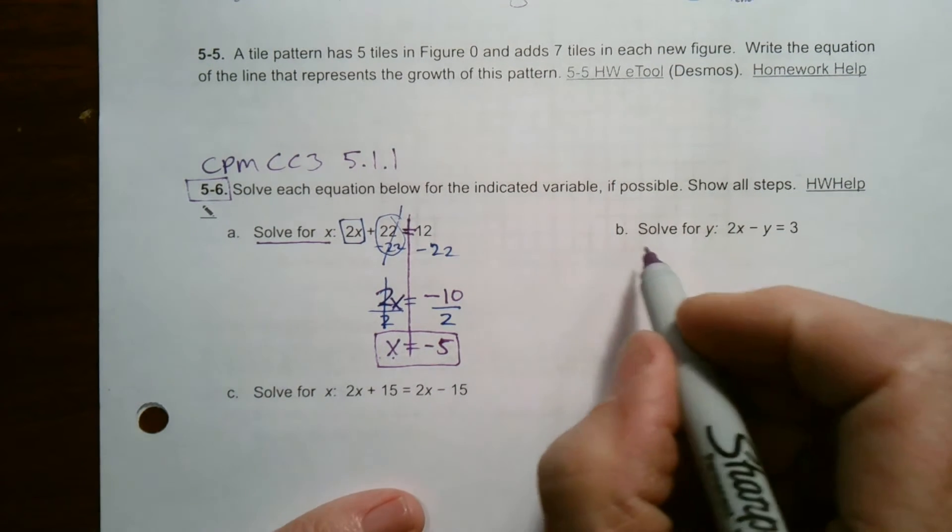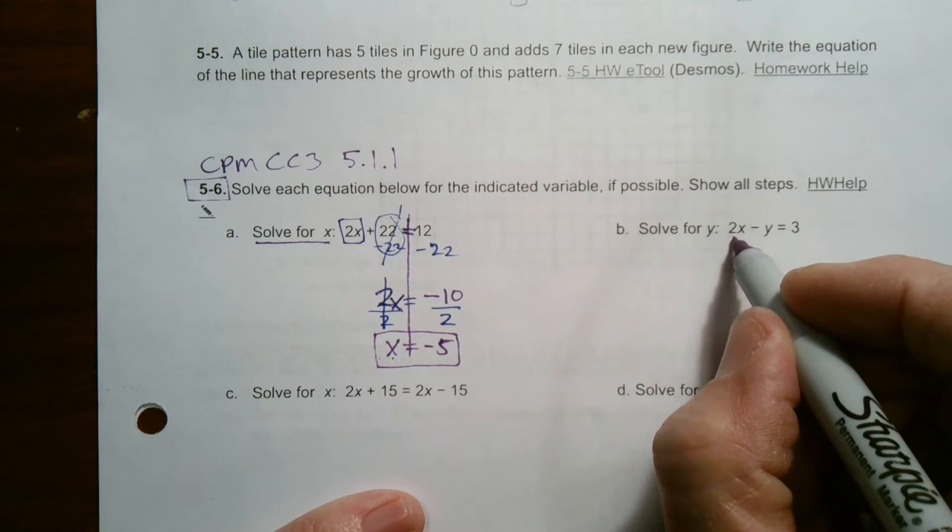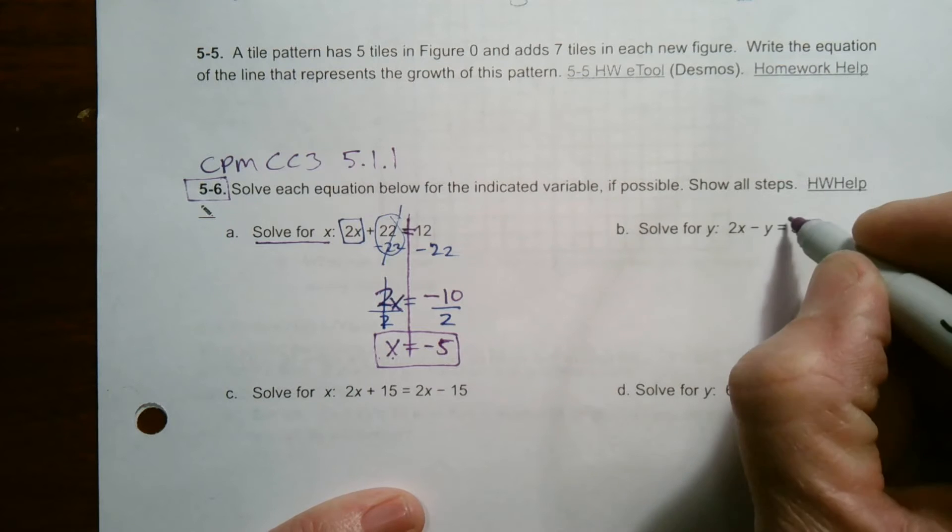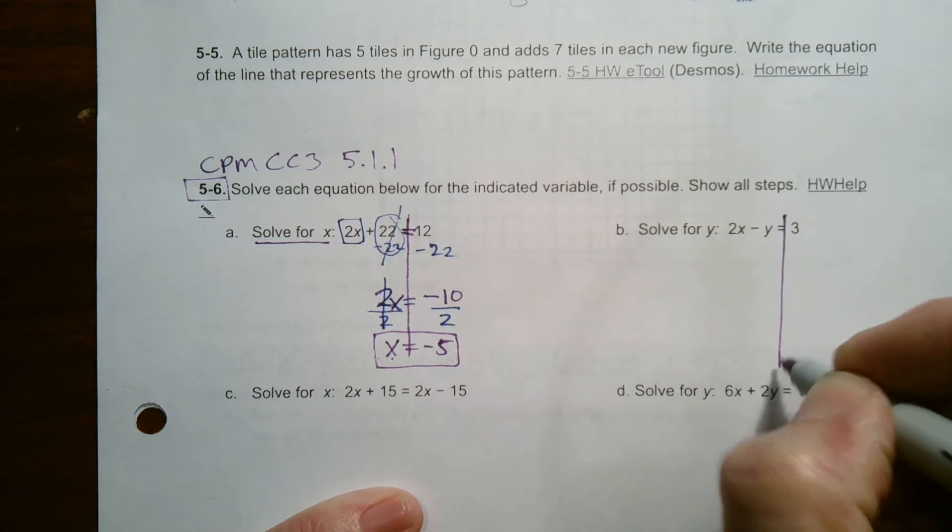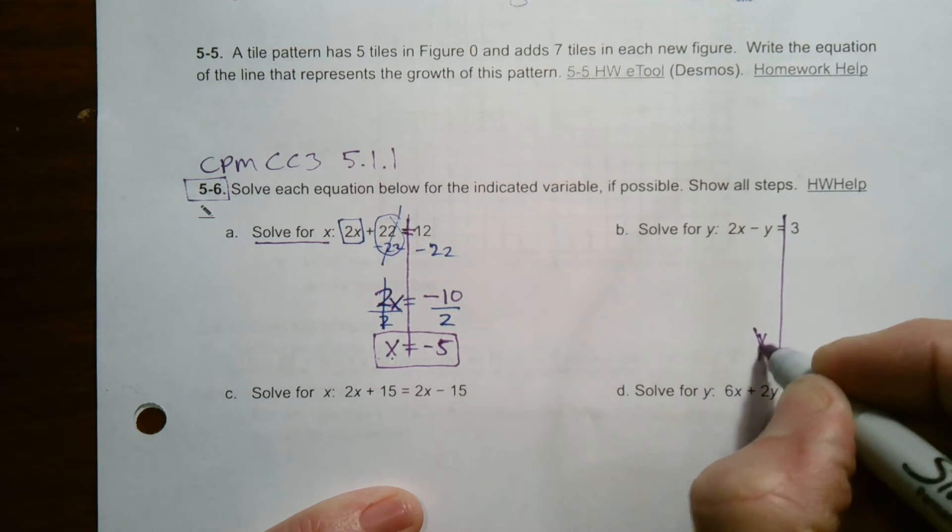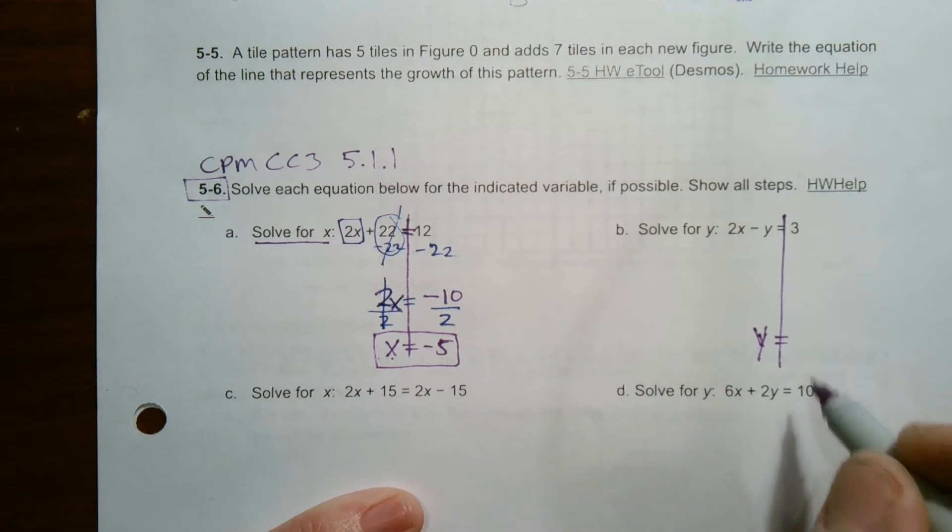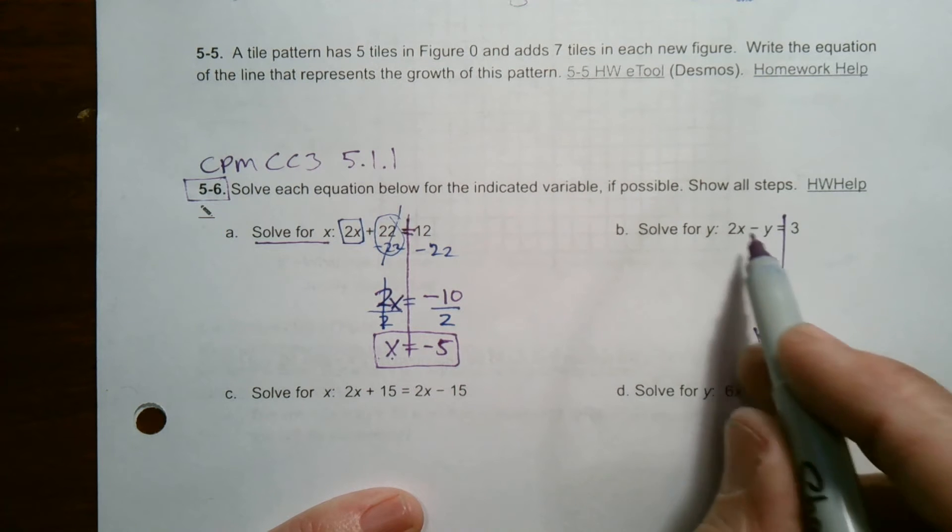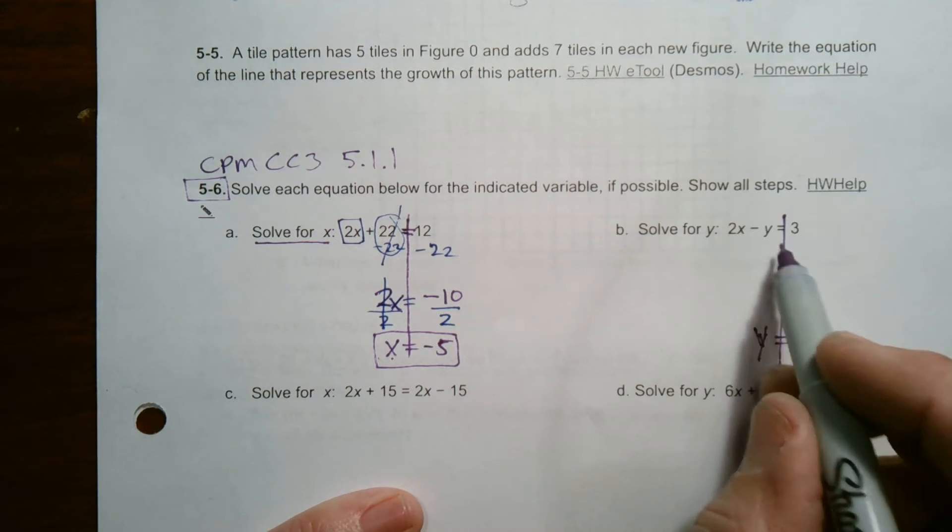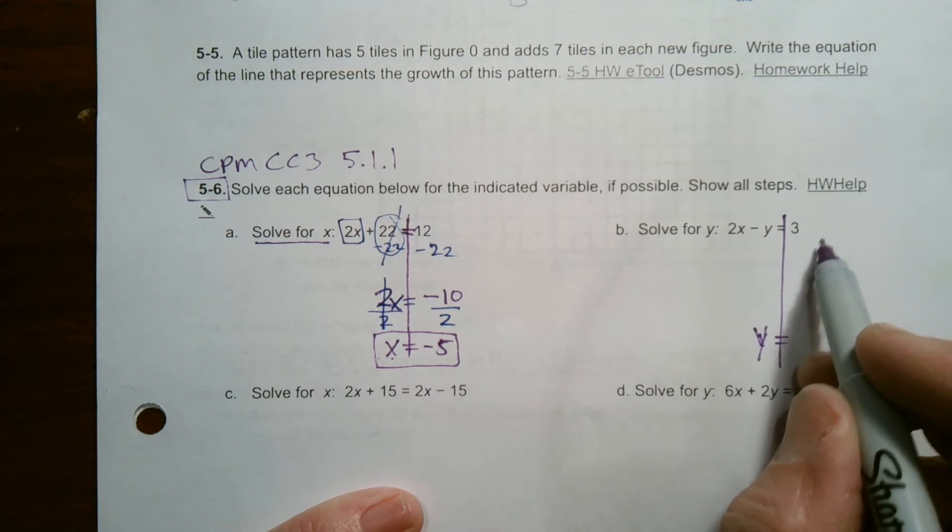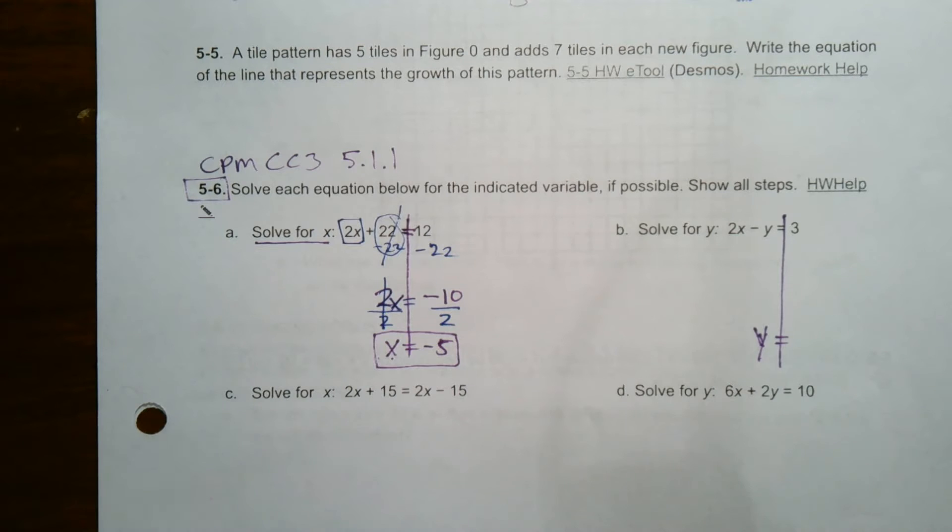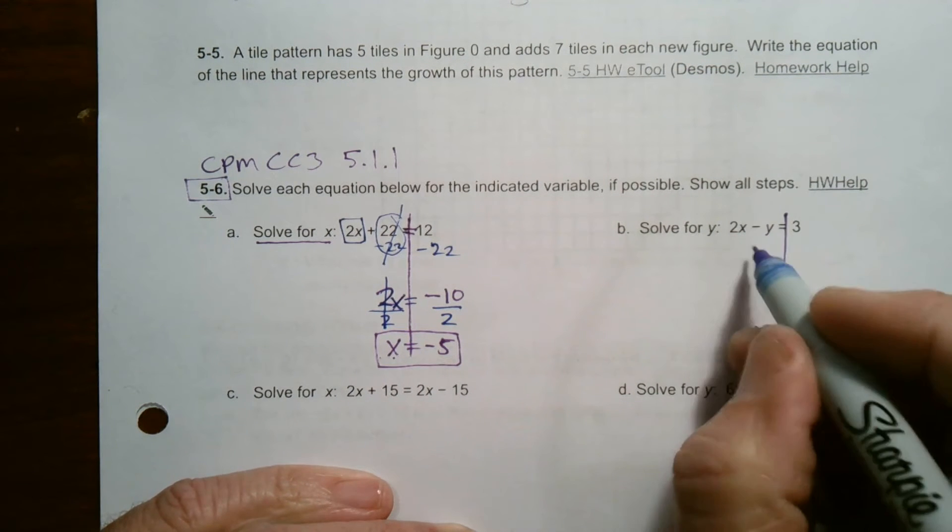Part B says solve for y. So here's an equation. Once again, my equation 2x minus y equals 3. I have an equation and I want my y. It says solve for y. So I want y alone. I want to isolate the y, the variable y. So I've got to get rid of everything on this side. First of all, I double check. There's only a y on this side. There's no y terms over here. So I'm already good. I've already got my y on the right side. But now I got to get rid of everything else.